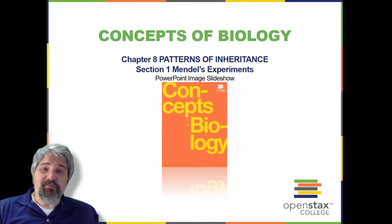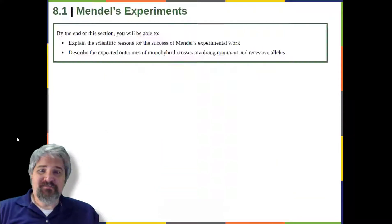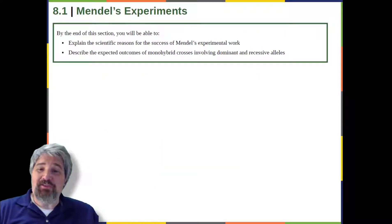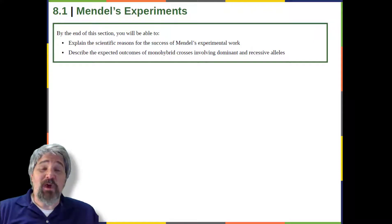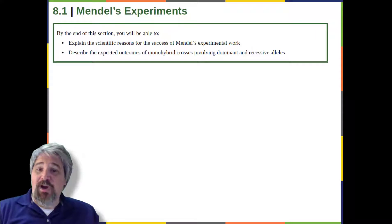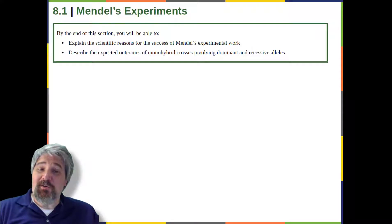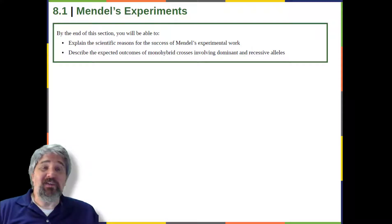Section 1: Mendel's Experiments. By the end of this section, you will be able to explain the scientific reasons for the success of Mendel's experimental work, and describe the expected outcomes of monohybrid crosses involving dominant and recessive alleles.